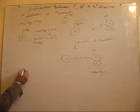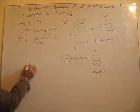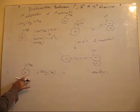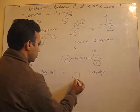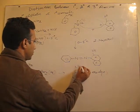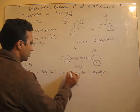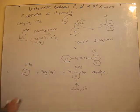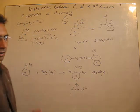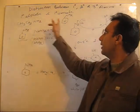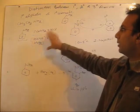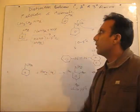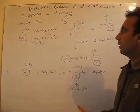Secondly, when aniline is made to react with bromine water, because it is not acetylated, there will be substitution at all available positions and we get 2,4,6-tribromoaniline with white precipitates. This reaction is not given by ethanamine. So when you have a distinction between primary aliphatic and aromatic amines, you can use the special reactions given by aniline — such as diazotization and bromination — which are not given by aliphatic primary amines like ethanamine. This is a very important distinction.